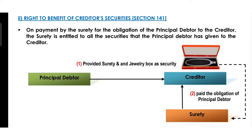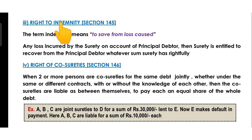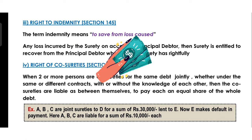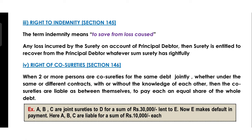This is called the right to benefit of the creditor's securities. Right number three is the right to indemnity. It is clear that the surety pays the loan amount to the creditor on behalf of the principal debtor, which is a kind of a loss to the surety. Here, the surety has the right to be indemnified from the principal debtor.